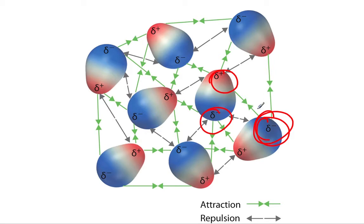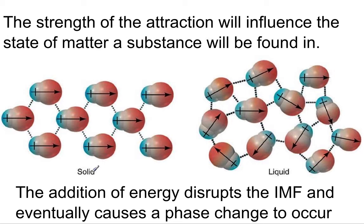This is going to influence the behavior of these particles when they're in a sample together. The strength of the attraction, how strong it is, influences the states of matter. If this attraction is really strong, this side's really attracted to this side, they're held together closely, this is going to result in a solid.